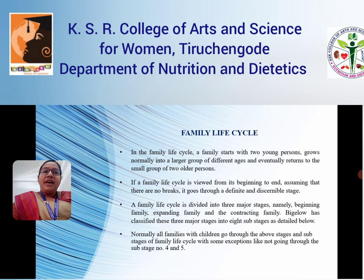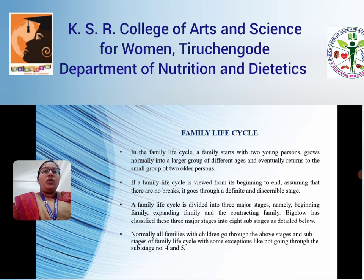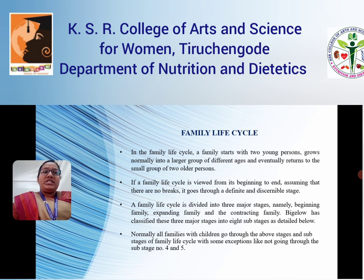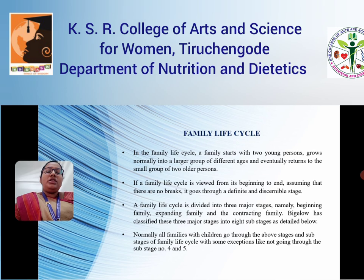In a family life cycle, a family starts with two younger persons, grows normally into a large group of different ages, and eventually returns to a small group of two older persons. If a family cycle is viewed from its beginning to the end, assuming there is no break, it goes through defined and discriminable stages. A family cycle is divided into three major stages: namely beginning family, expanding family, and contracting family.